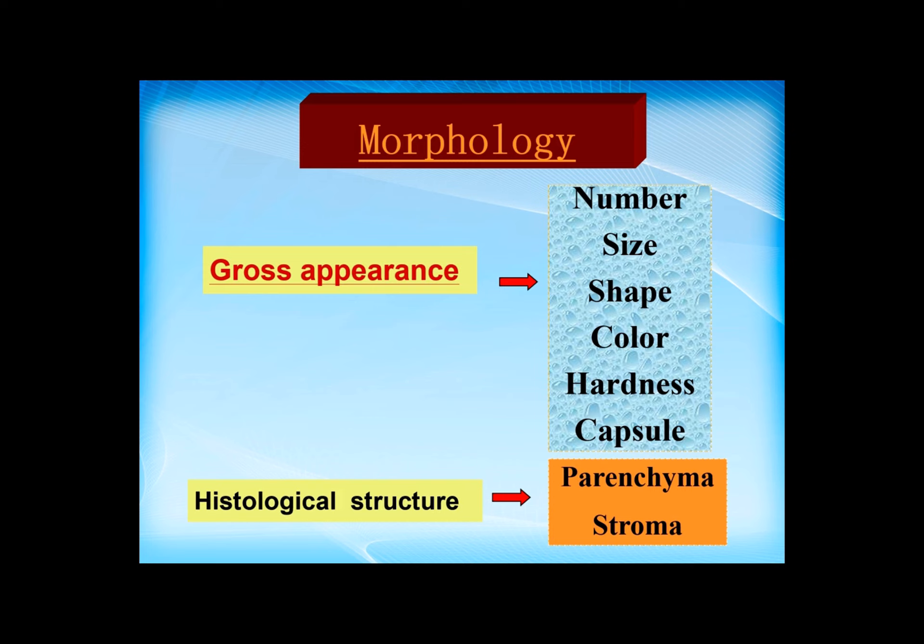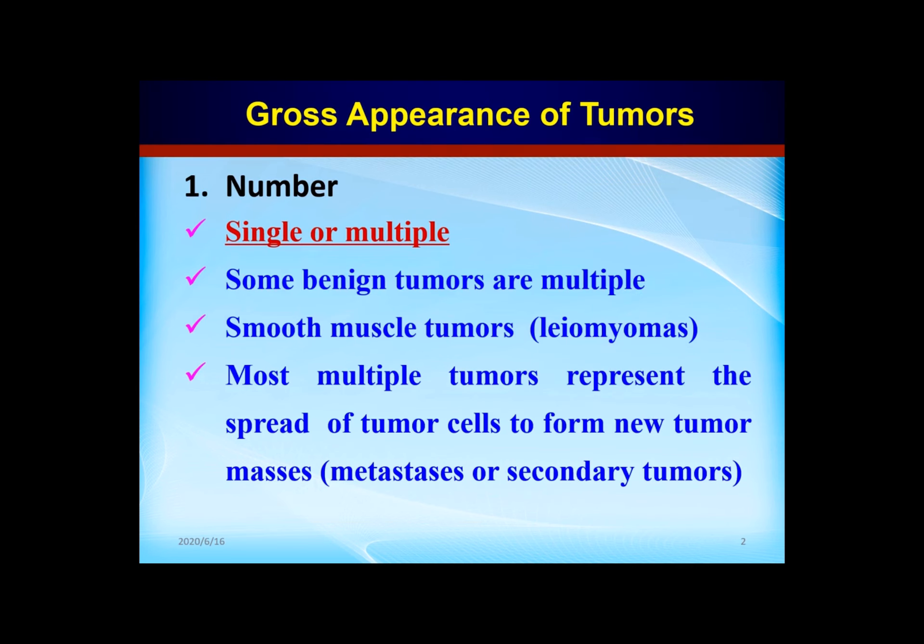The gross changes contain the following: number, size, shape, color, hardness, and capsules. The histologic structure contains two components: one is parenchyma, the other is stroma.